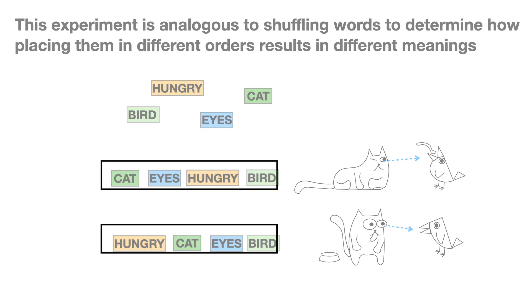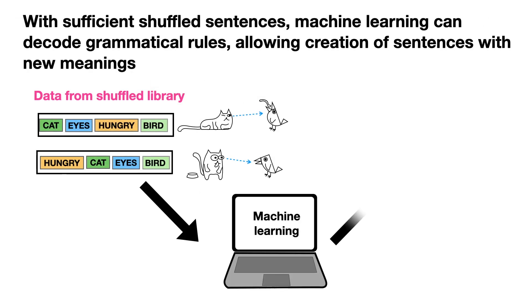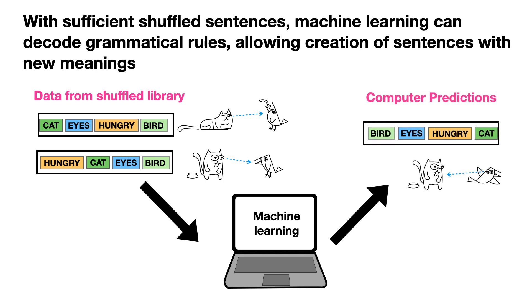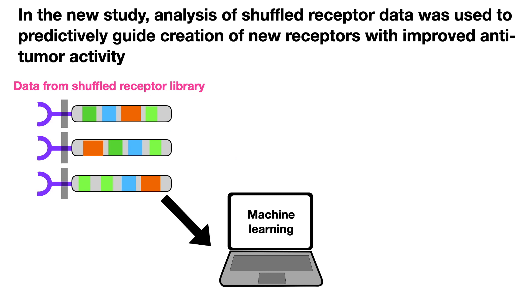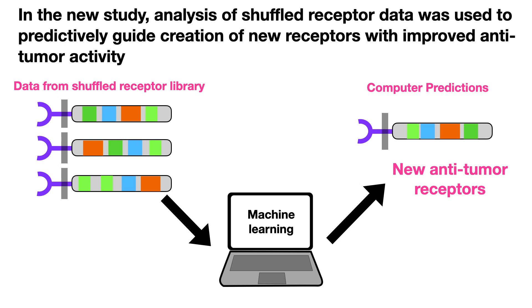With sufficient shuffled sentences machine learning can decode grammatical rules allowing creation of sentences with new meanings. In the new study analysis of shuffled receptor data was used to predictively guide creation of new receptors with improved anti-tumor activity.